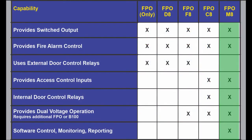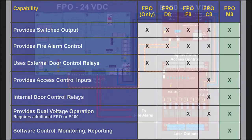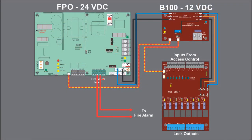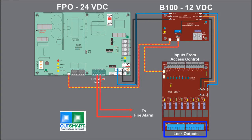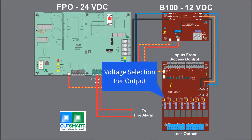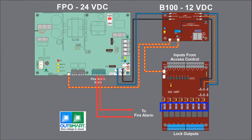The last combination is the FPO M8, which provides all the access control features of the C8, however with some major enhancements. A full-featured lock control board, the M8 has eight inputs to interface to an access system. It's capable of accepting a normally open, normally closed, or a voltage trigger. It has eight outputs to control fail-safe or fail-secure locks, fire alarm interface by output, the ability to work with two voltage sources, and individual fusing or PTC protection for each output.